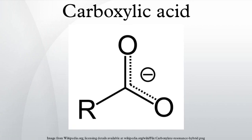Synthesis — Industrial routes: in general, industrial routes to carboxylic acids differ from those used on a smaller scale because they require specialized equipment. Oxidation of aldehydes using cobalt and manganese catalysts — the required aldehydes are readily obtained from alkenes by hydroformylation. Oxidation of hydrocarbons using air: for simple alkanes, the method is non-selective but so inexpensive as to be useful.